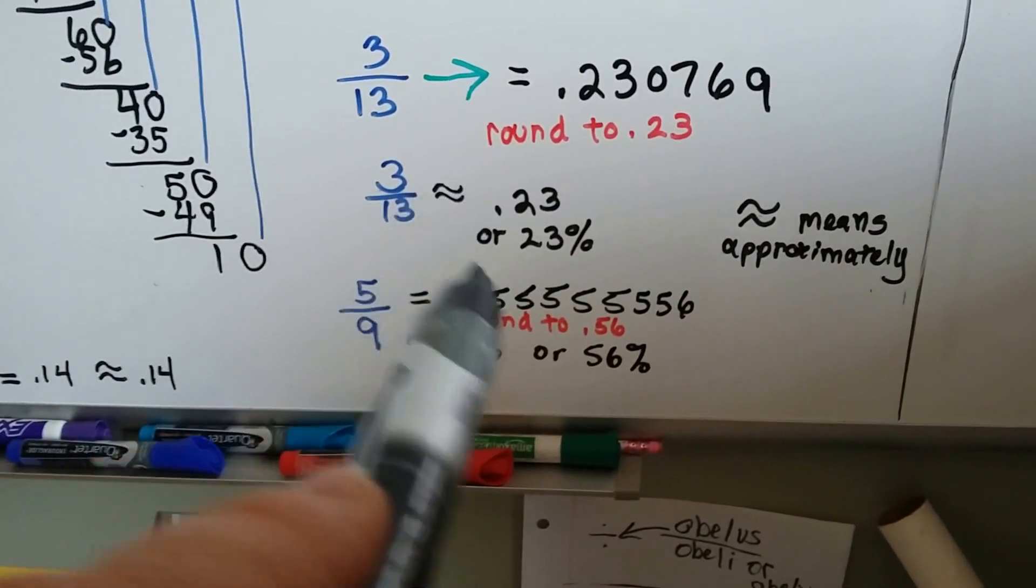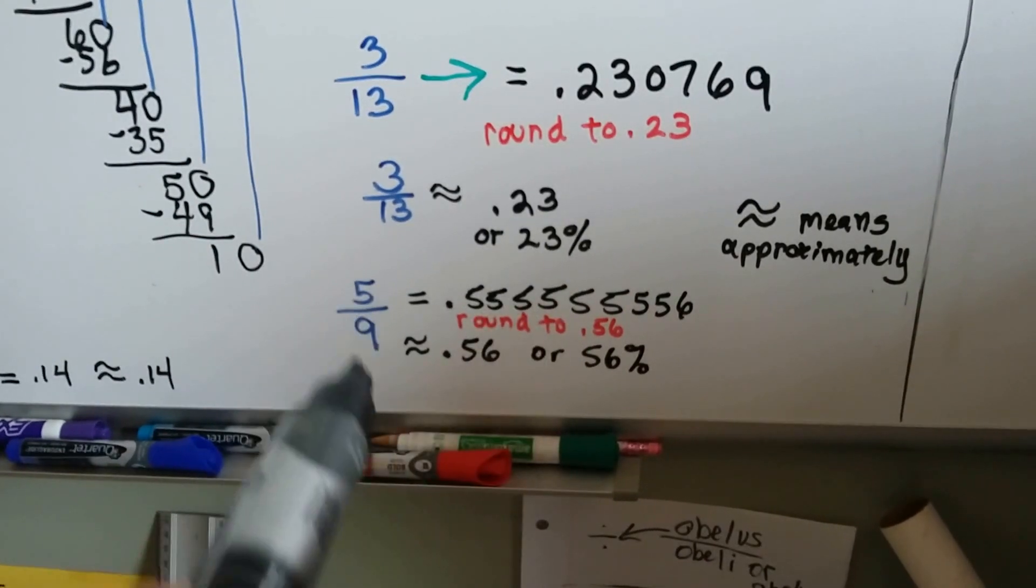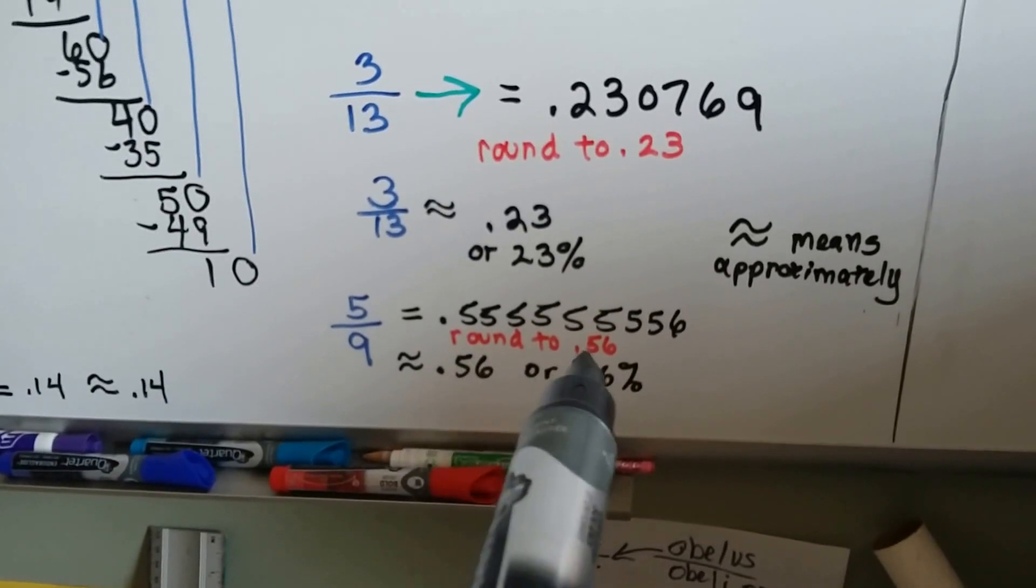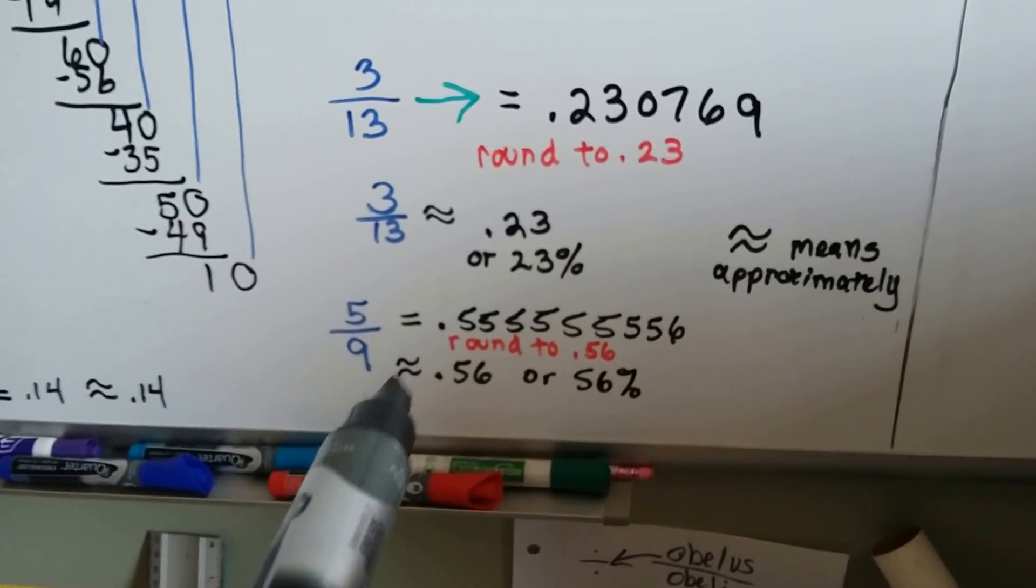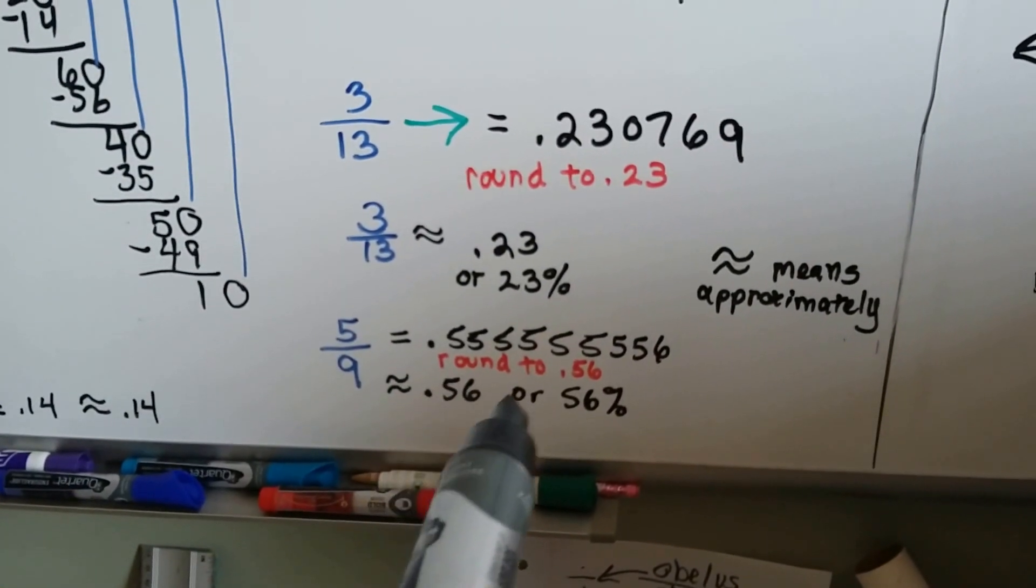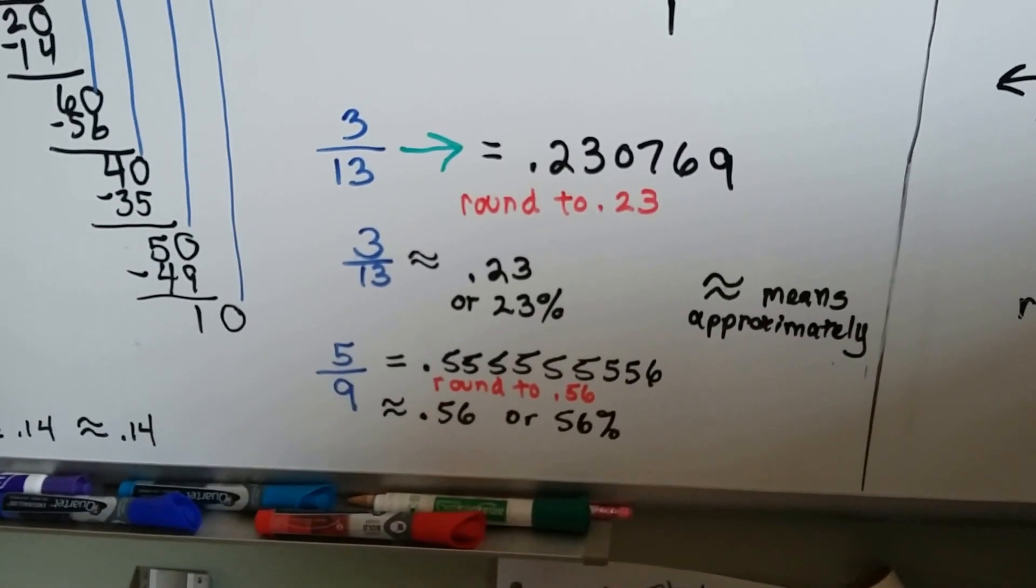So, we could say it's approximately twenty-three percent. Five-ninths comes out to eight fives before it hits a six. And, we can round it to point-five-six, but then we need to use the approximate sign saying it's approximately point-five-six, or approximately fifty-six percent.